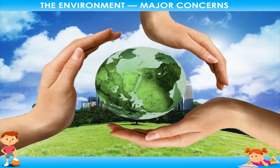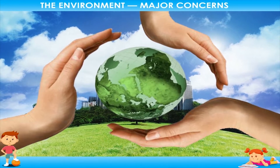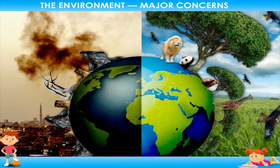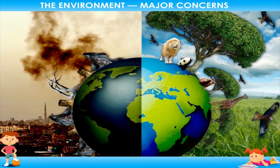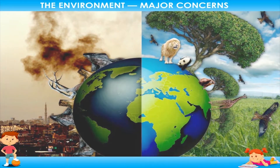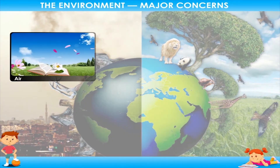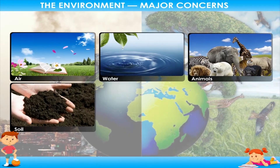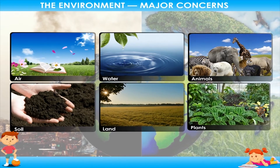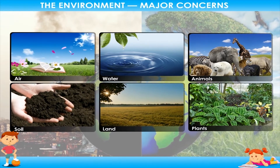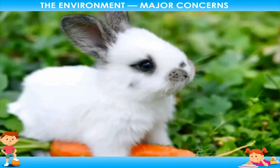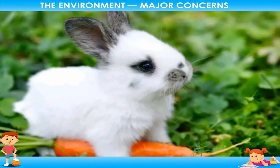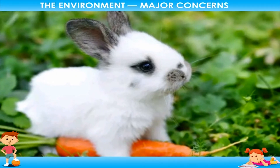We live in an environment composed of various things. There are several things that make up our environment such as air, water, animals, soil, land, plants, etc. The surroundings in which an organism lives is called its environment.